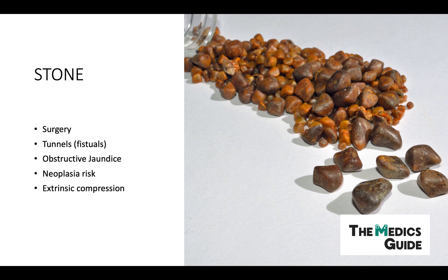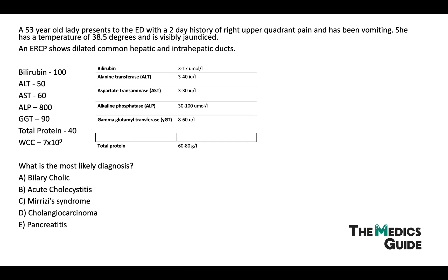For a practice question: a 53-year-old lady presents to the ED with a two-day history of right upper quadrant pain and vomiting. She has a temperature of 38.5°C and is visibly jaundiced. ERCP shows dilated common hepatic and intrahepatic ducts. Blood results show high bilirubin, high ALT and AST, very high ALP, high gamma-GT, slightly low protein, and a normal white cell count. The answer is Mirizzi's syndrome — high bilirubin, high ALP, RUQ pain with systemic upset and jaundice, and dilated ducts on ERCP.